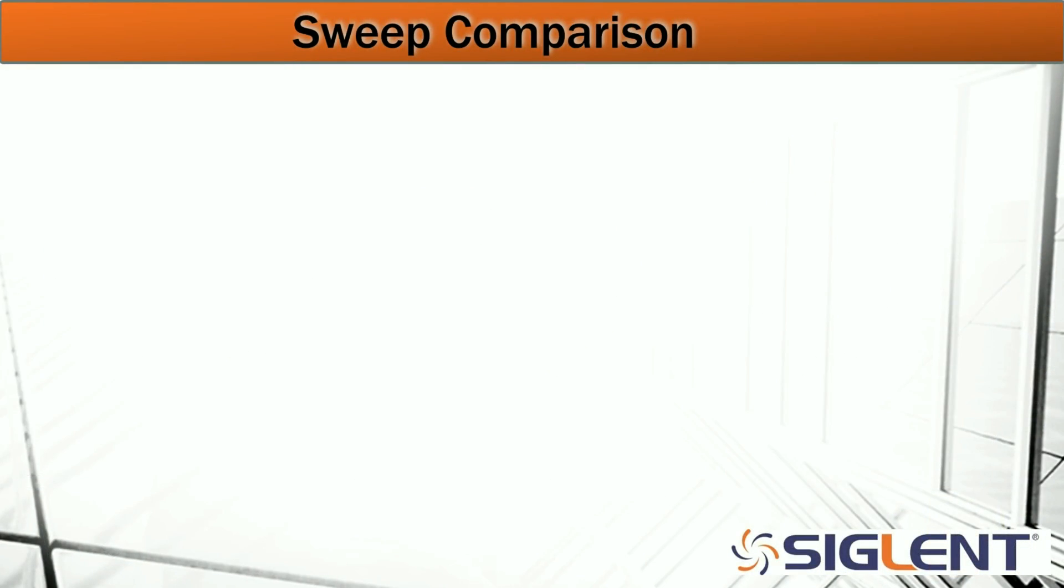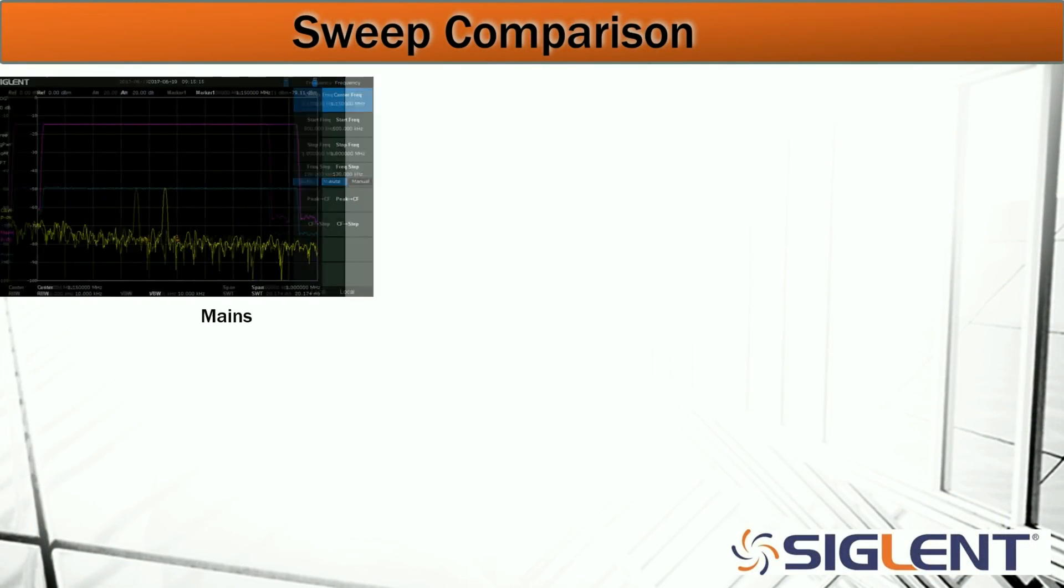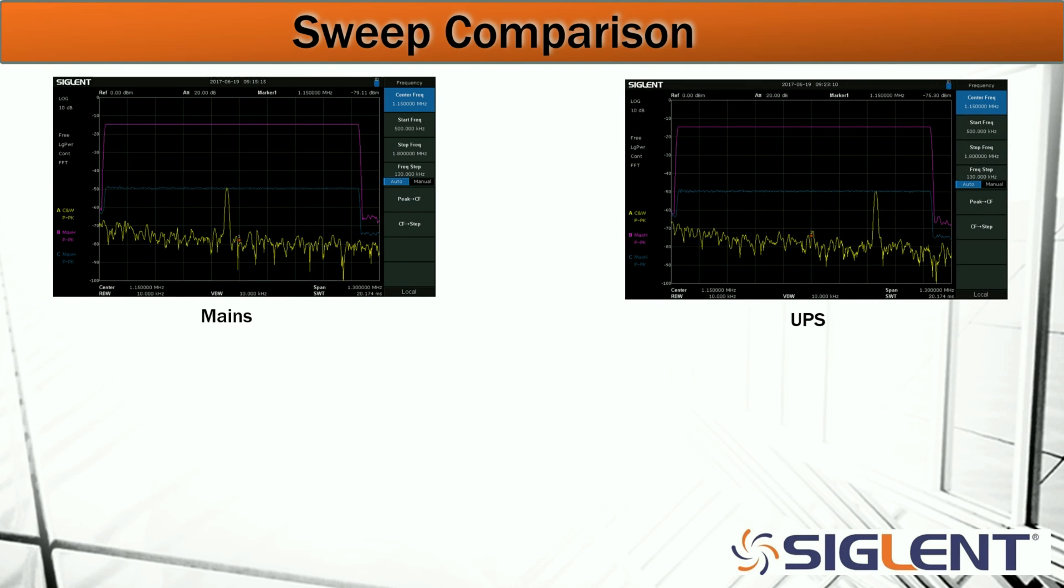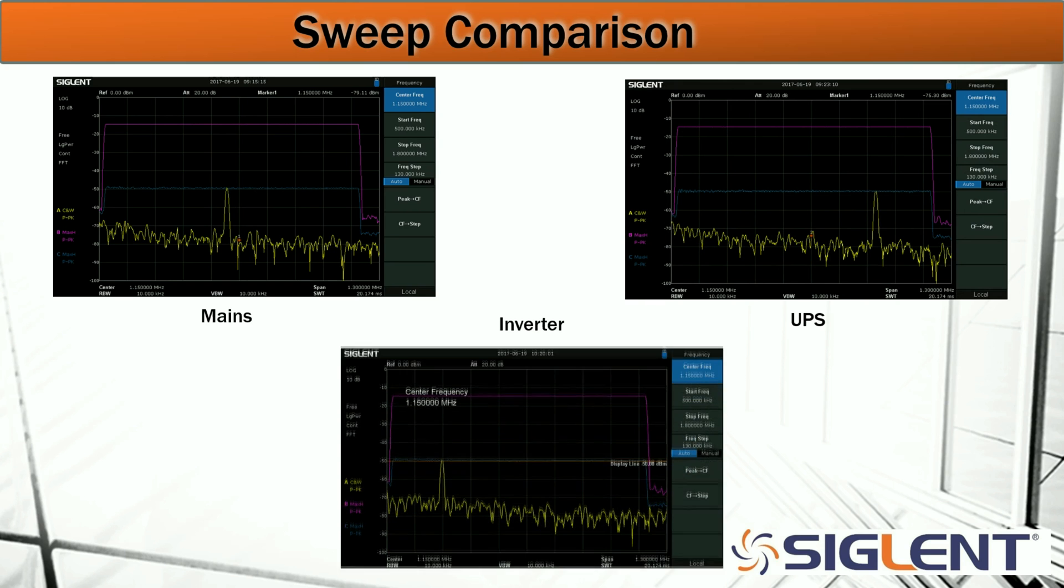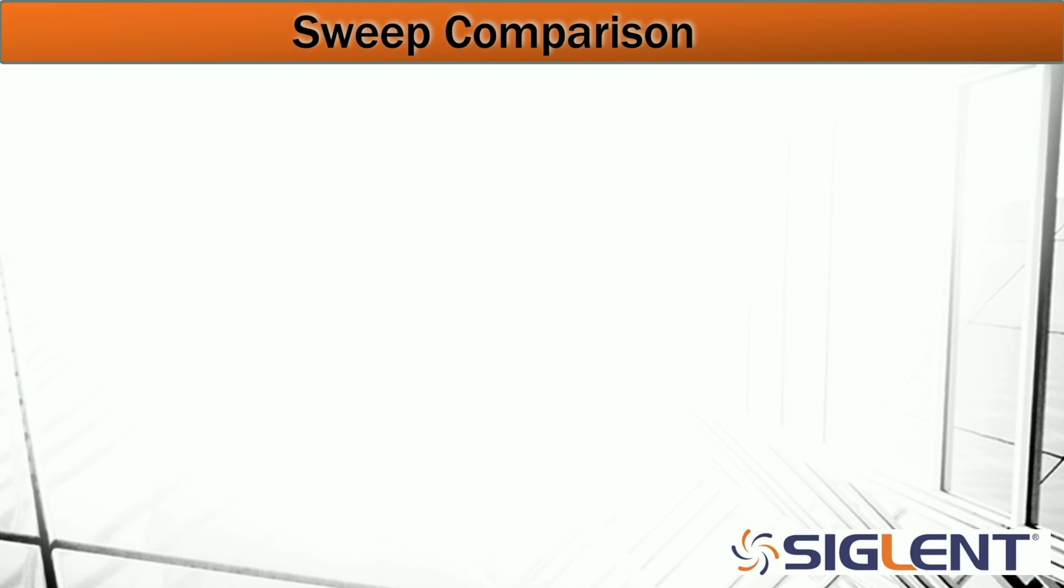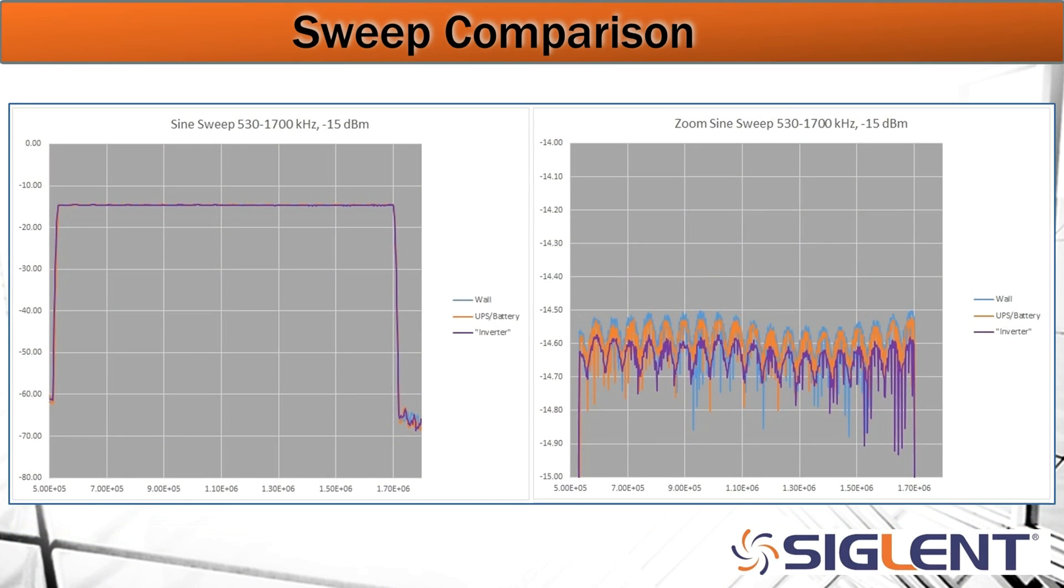We can easily compare all of the data collected from the different power modes using the bitmap images. Here we've got mains of the sweep, the uninterruptible power data, and then also the data collected using the inverter. Again they look quite similar, but we can also collect the raw CSV file data for each of the individual sweeps and then compare them or overlay them in a spreadsheet program.